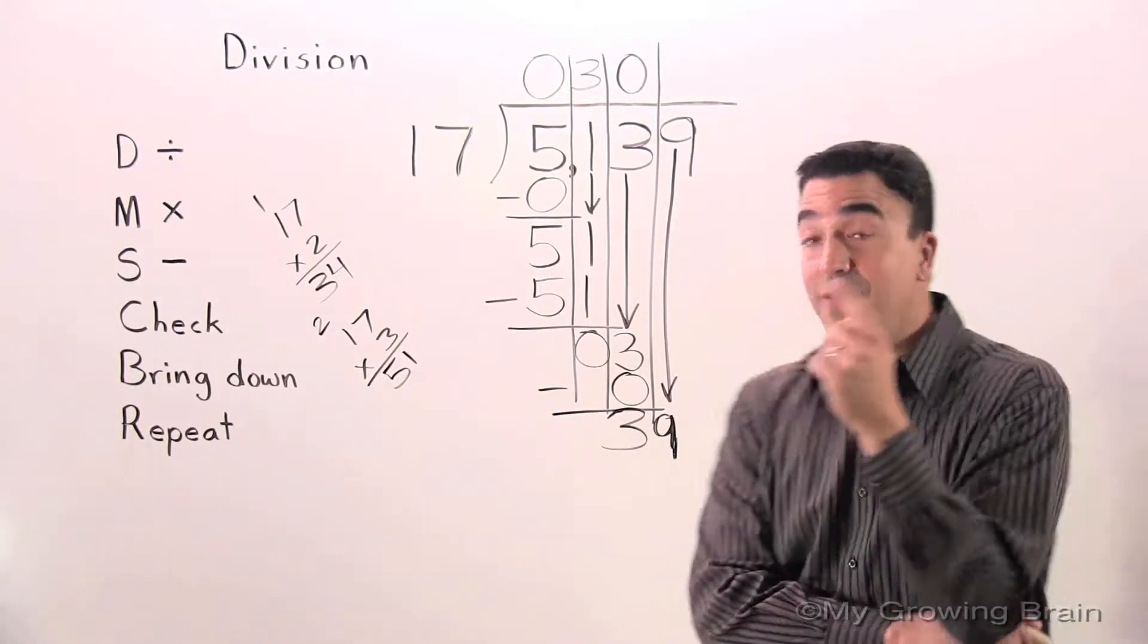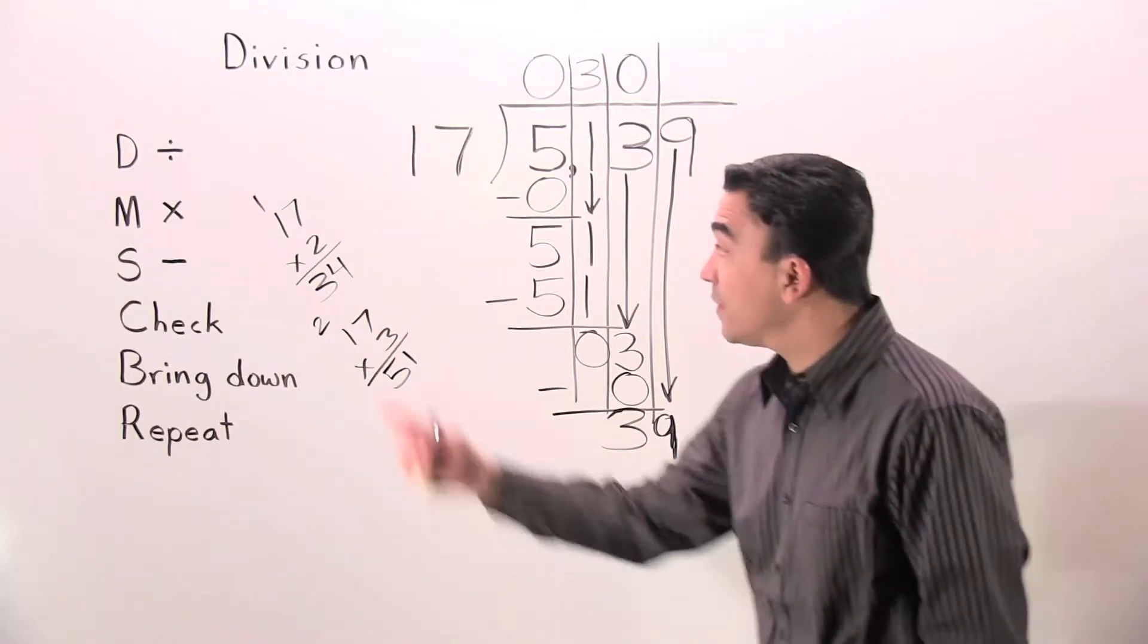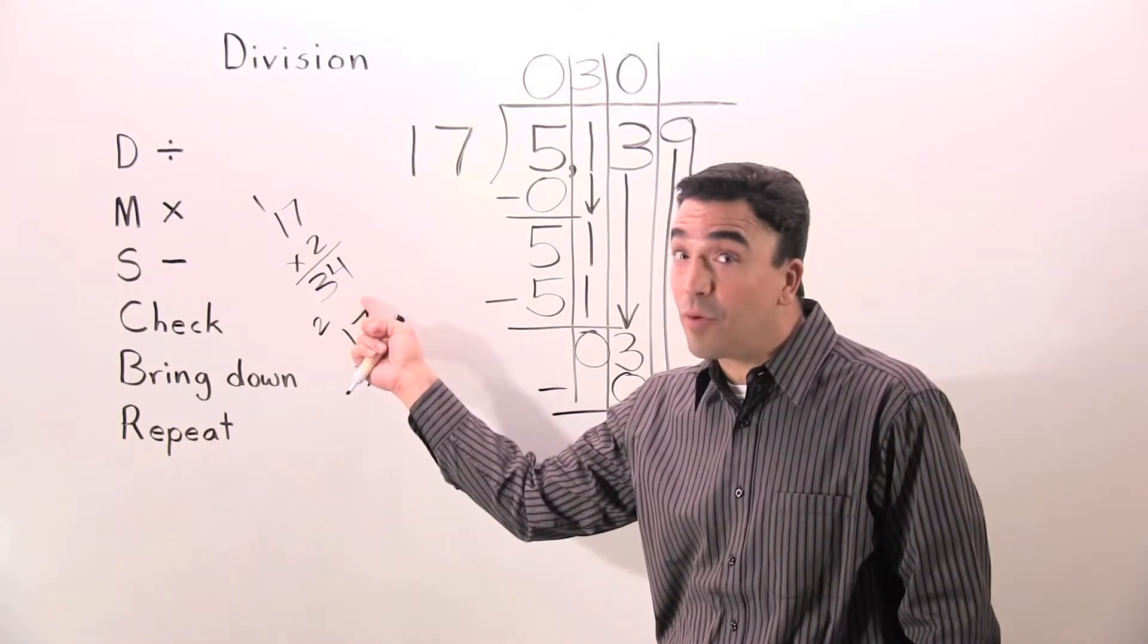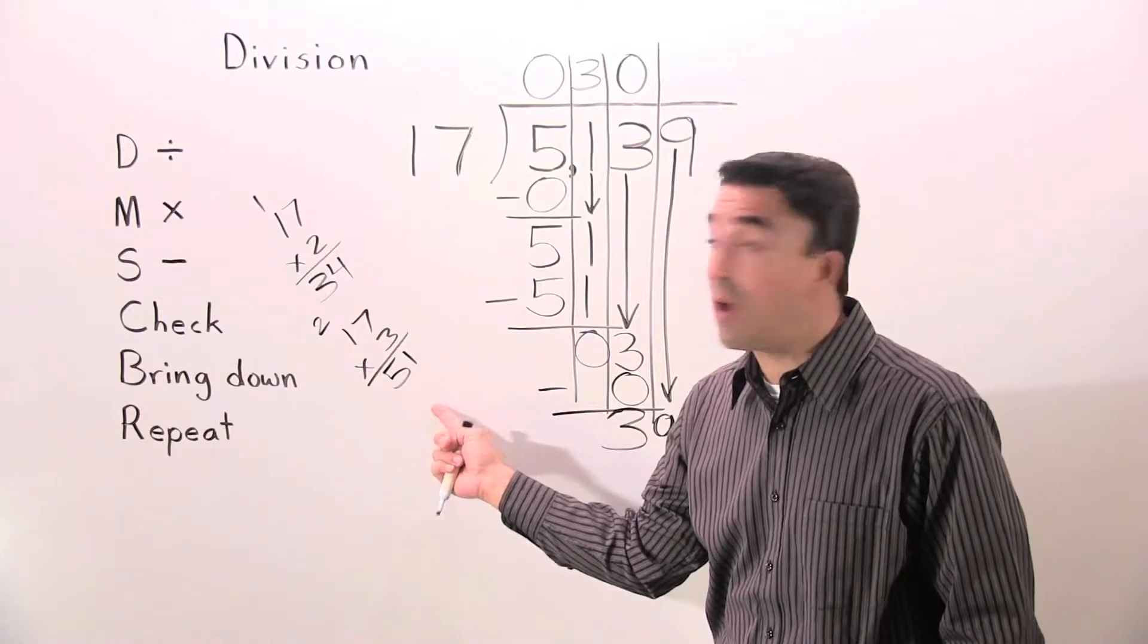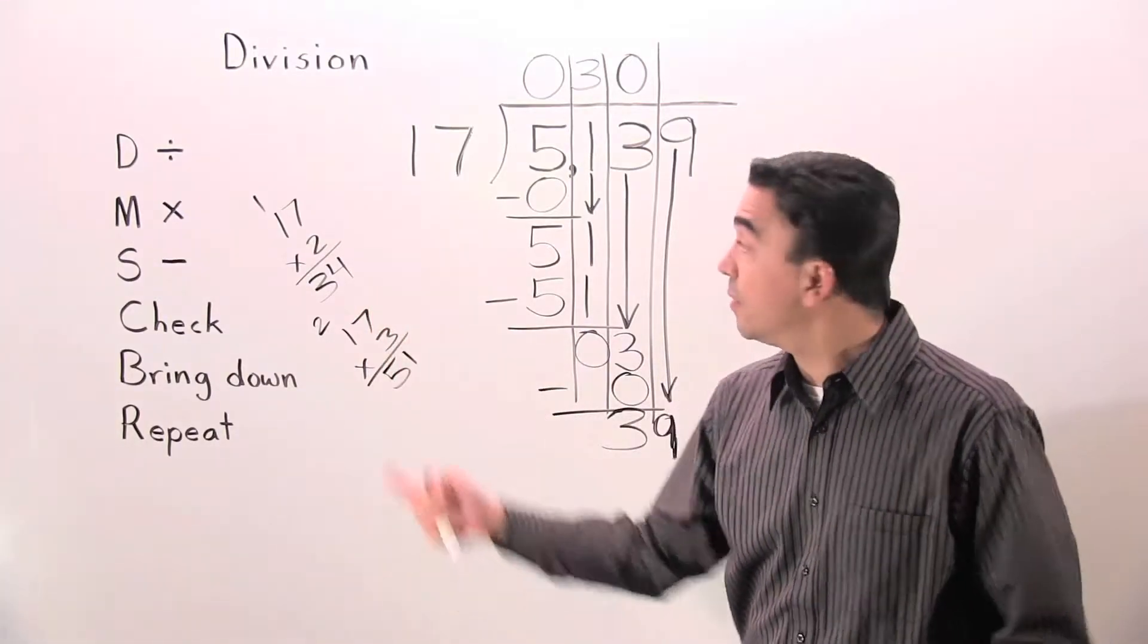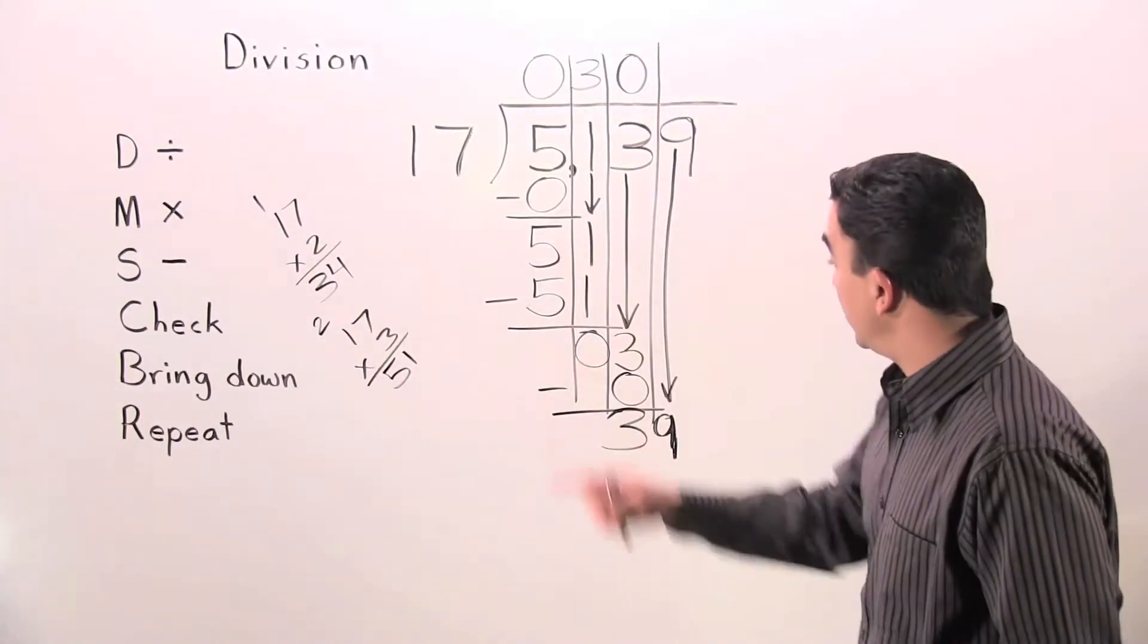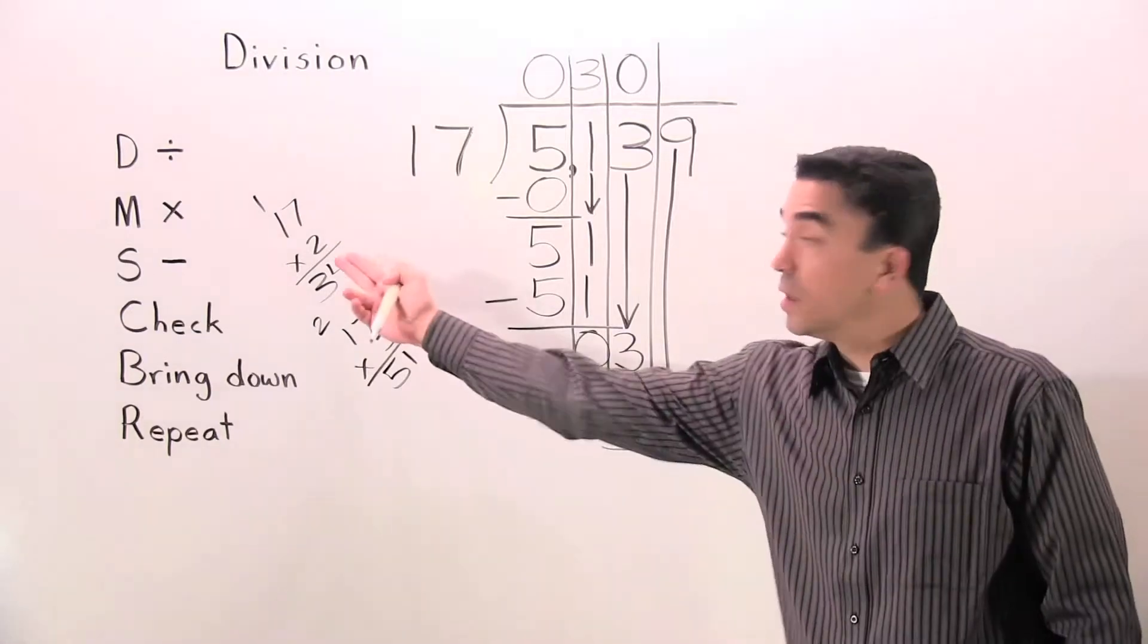17 times 1 is 17. 17 times 2 is 34. We have it on the board. 17 times 3 is 51. We know that the closest number will be 17 times 2. So 17 can go into 39 2 times.